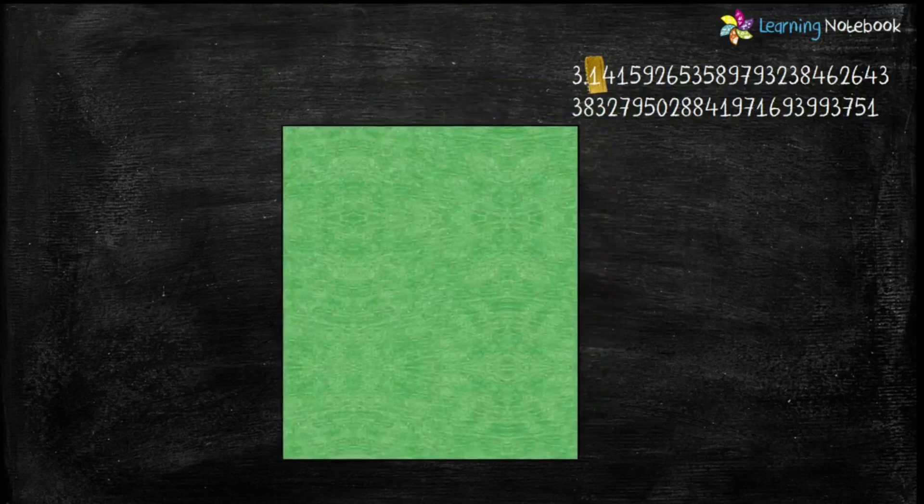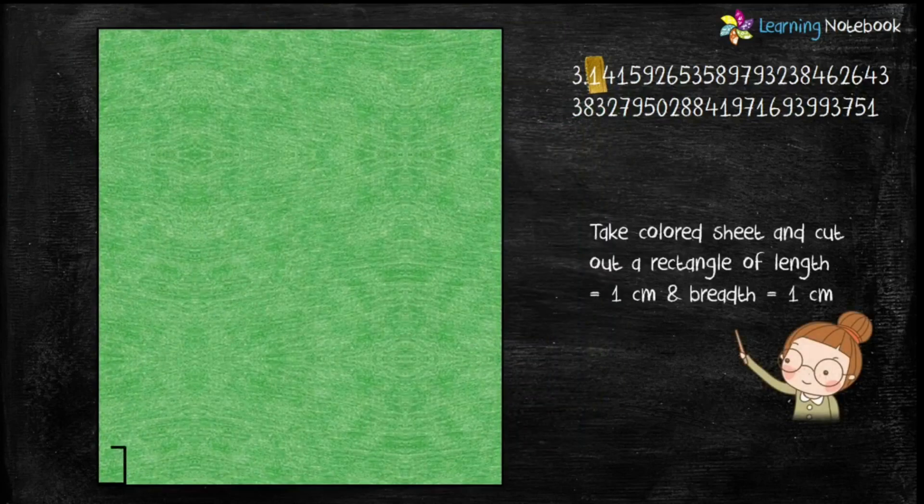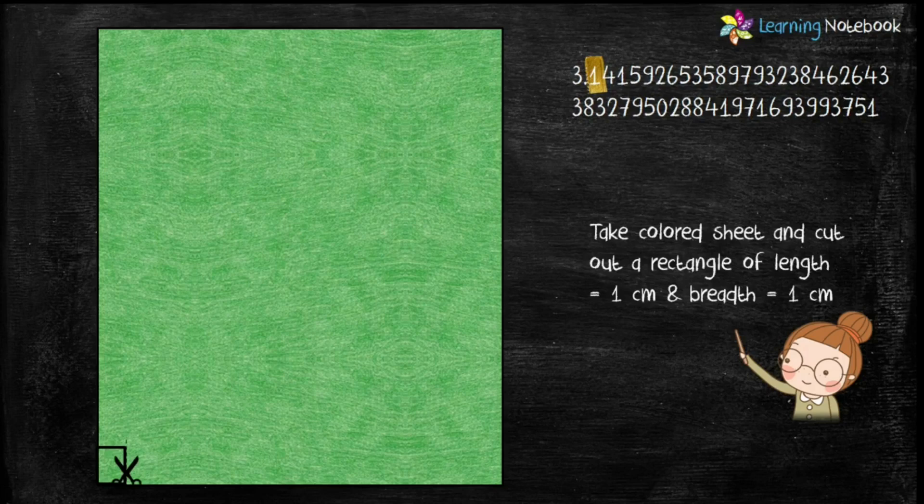The next digit in the value of pi is 1, so students take another colored sheet and cut out a rectangle of length 1 centimeter and breadth 1 centimeter.